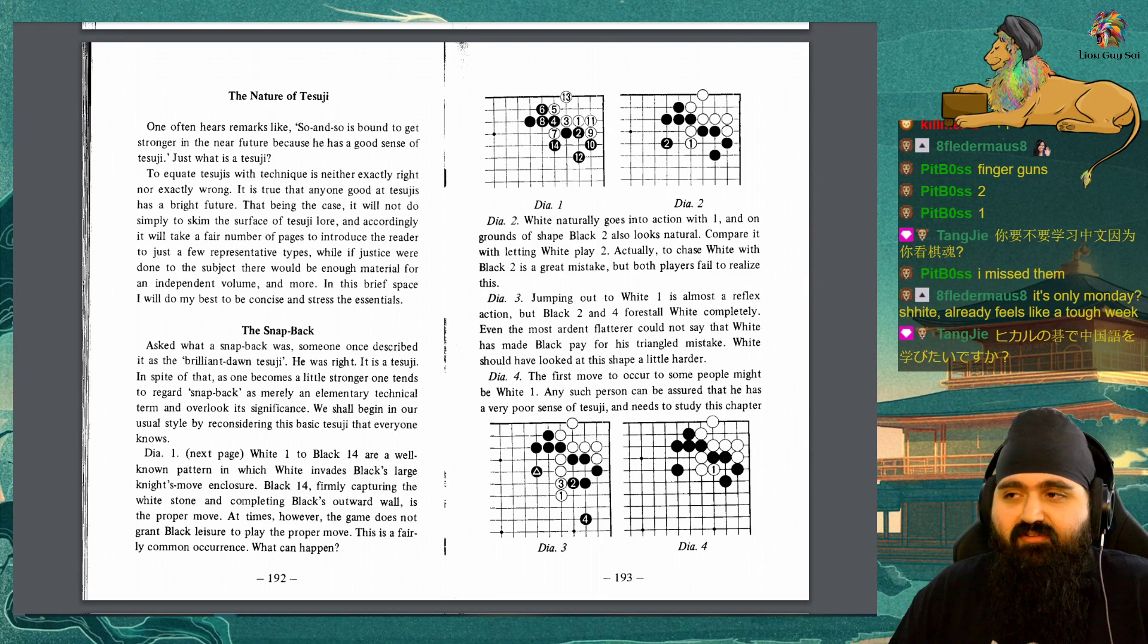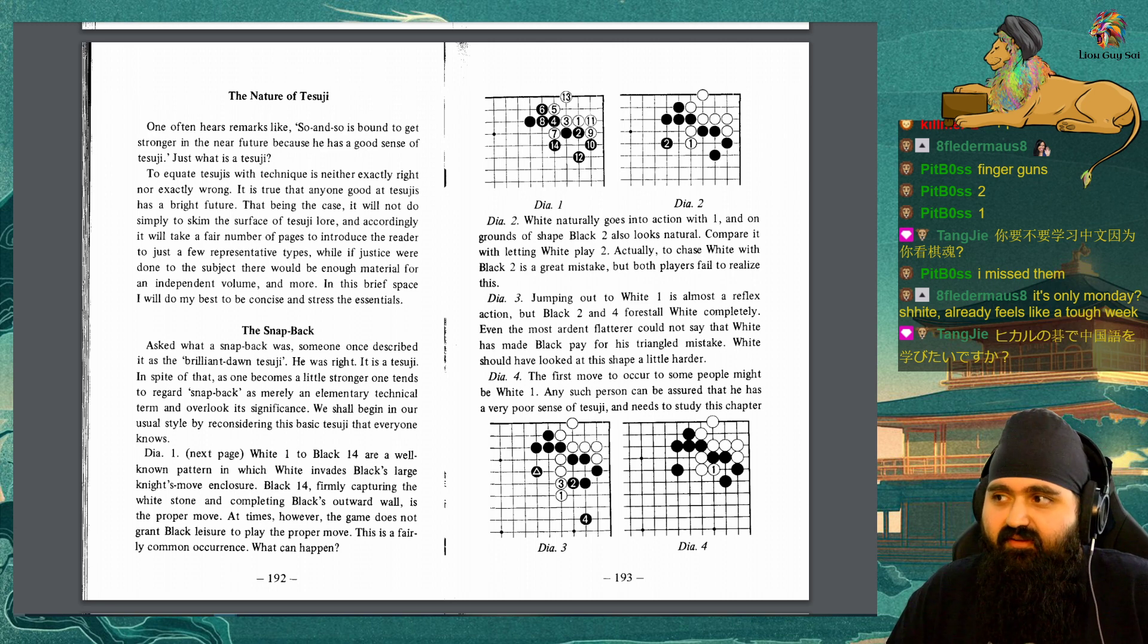One often hears remarks like so-and-so is bound to get stronger in the near future because he has a good sense of tesuji. Just what is tesuji? To equate tesuji with technique is neither exactly right nor exactly wrong. It is true that anyone good at tesuji has a bright future. That being the case, it will not do simply to skim the surface of tesuji lore. In this brief space I will do my best to be concise and stress the essentials. The snapback: Asked what a snapback was, someone once described it as a brilliant Don tesuji. He was right.